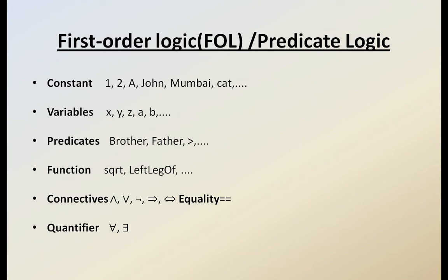Constants include values like 1, 2, A, John, Mumbai, Cat. Variables are X, Y, Z, A, B. Predicates include brother, father, greater-than, etc. Functions include square-root, left-leg-of, etc. Connectives include AND, OR, negation, implication, bi-implication, and equality. Quantifiers are for-all and there-exists — the universal quantifier and existential quantifier. These are the key elements relevant to predicate logic.